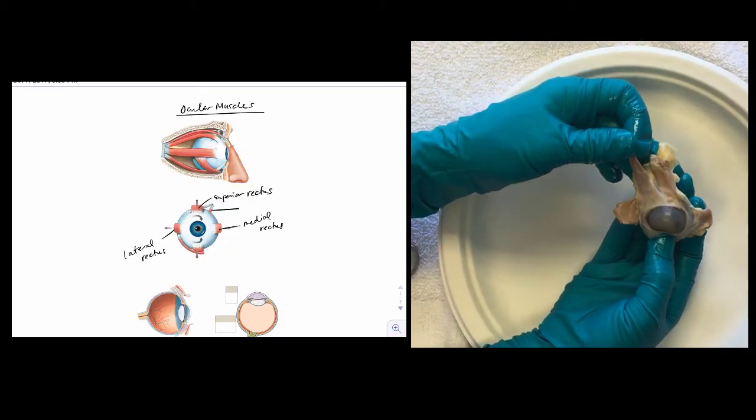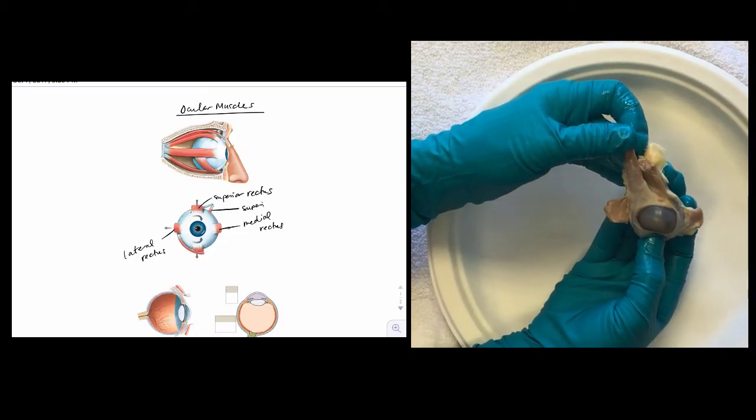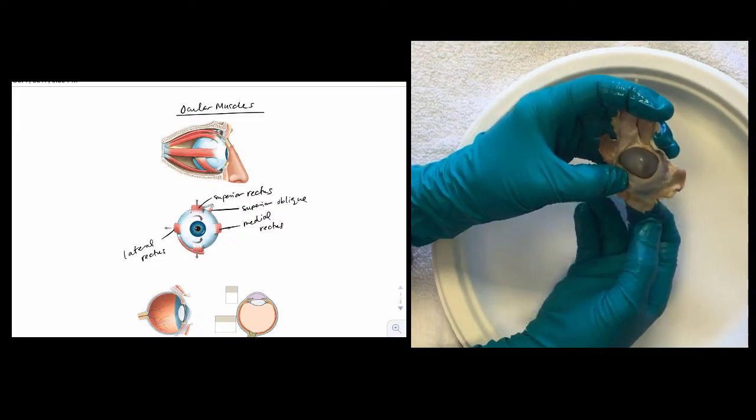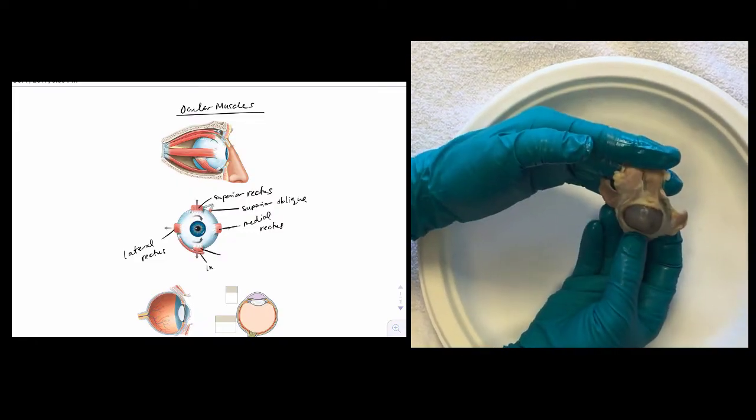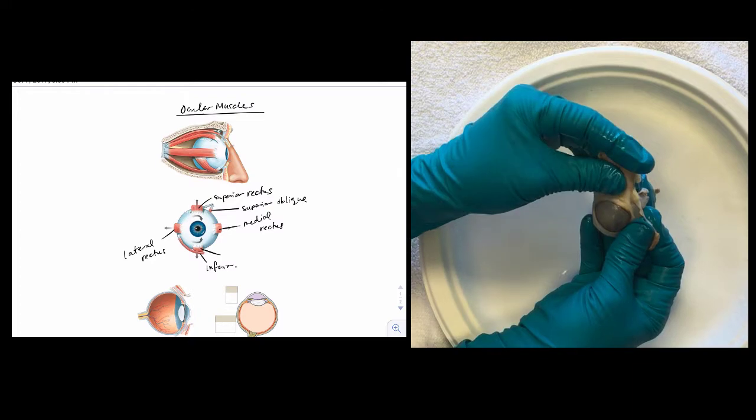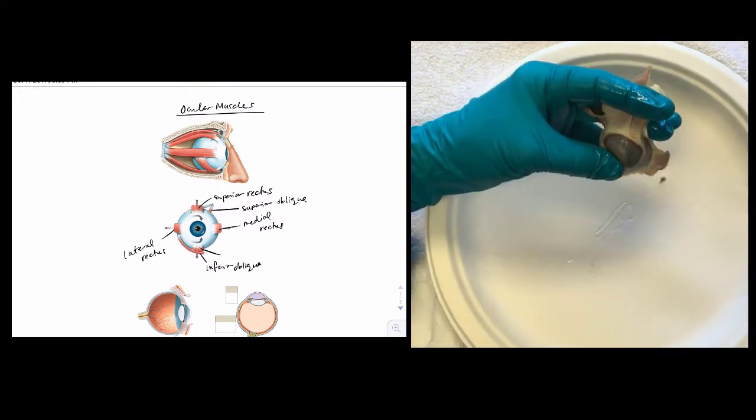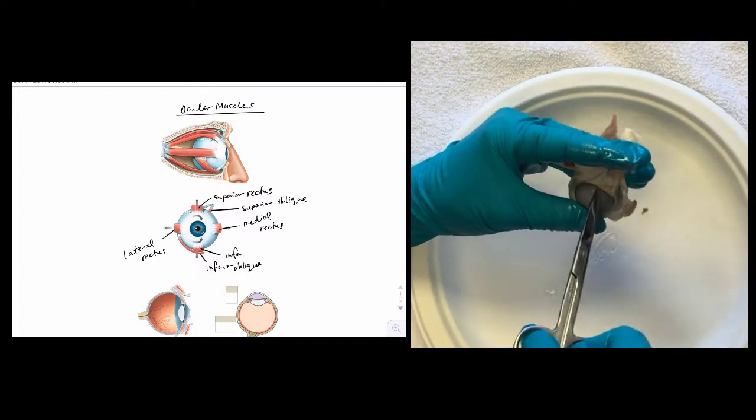On this eye dissection there's also a superior oblique muscle left, but the inferior rectus and inferior oblique have been cut. If you have eye muscles left, cut through them to make room for your dissection.